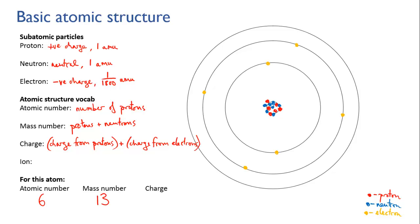If there are more protons, the overall charge will be positive, and if there are more electrons, the overall charge will be negative. In this case, they're equal — we've got six protons, so that's a charge of plus six, and we have six electrons, so that's a charge of minus six. So the total charge is six plus minus six, which equals zero — it's a neutral atom.